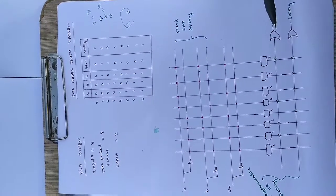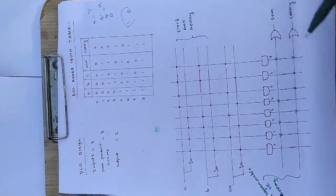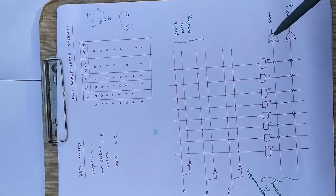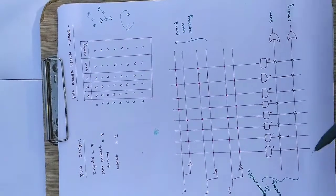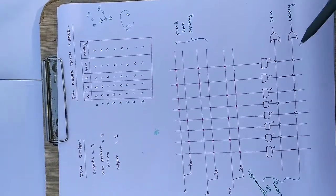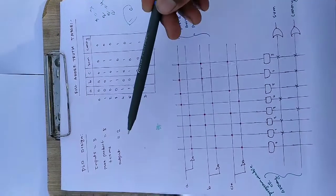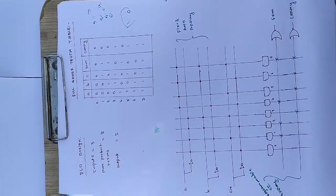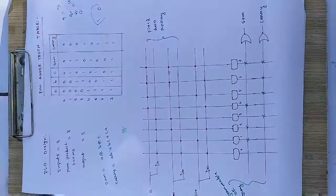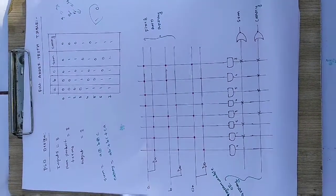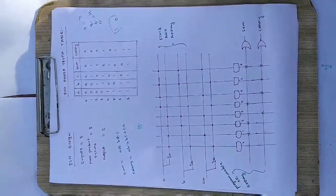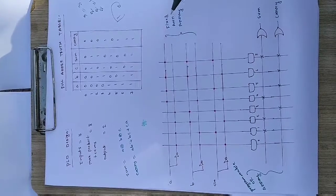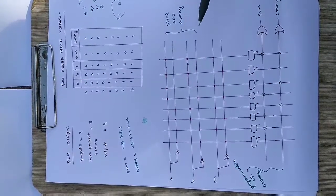Since there are two outputs, draw two OR gates. The first OR gate gives the Sum output, and the second OR gate gives the Carry output.